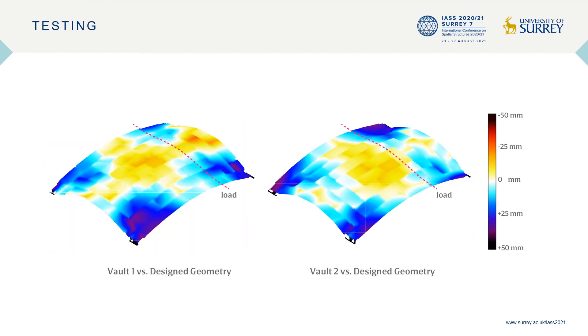3D scanning was used to compare the as-built geometry with the designed one. The scan shows that vault 2 is closer to a flat arch geometry than vault 1.